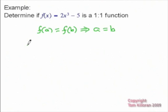So f(a) in this case would be 2a³ minus 5. f(b) in this case would be 2b³ minus 5. And then you basically just solve for a. You could solve for b, but most people would just solve for a.